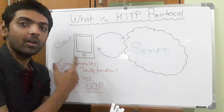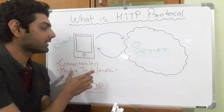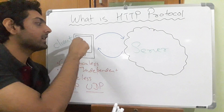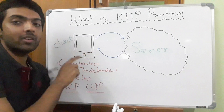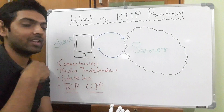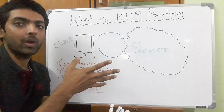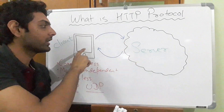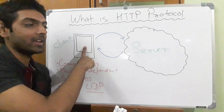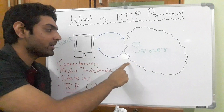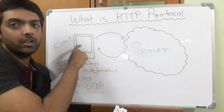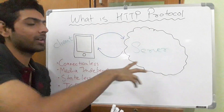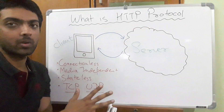Because of that, this communication becomes stateless, because now this device is not really expecting data — it has just sent a request. Now it's the server's duty to get the IP of this particular device and send back the data that the device really wants. So this protocol becomes a stateless protocol.